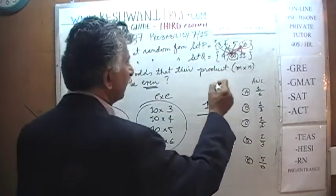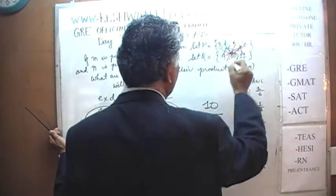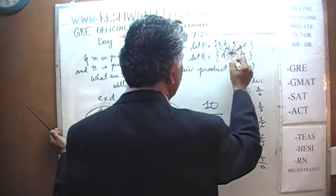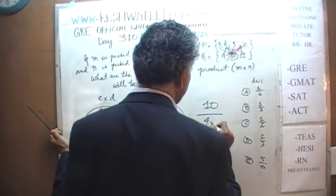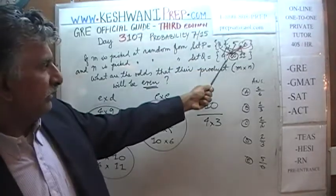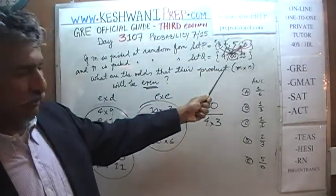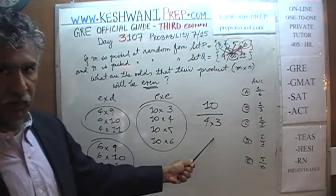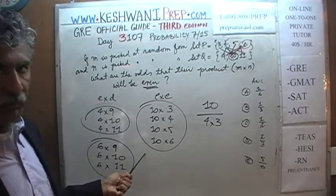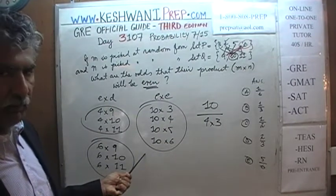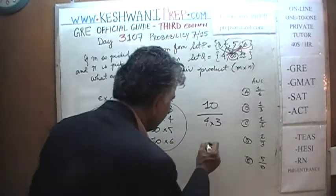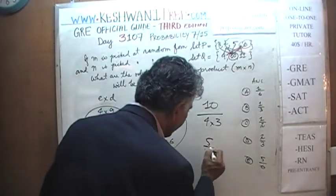The total number of different products is 4 elements in set P times 3 elements in set Q, which gives us 12 different products. Out of those 12, we found 10 to have an even product. So 10 out of 12 boils down to 5 out of 6.